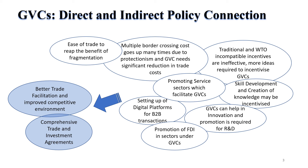A more liberal environment is necessary for a reduction of cost because components and parts can cross the border several times. Many of the subsidies and incentives provided by different countries are becoming ineffective because many of them are incompatible. So it is very important to understand what kind of policy incentives we can actually give to promote global value chains.